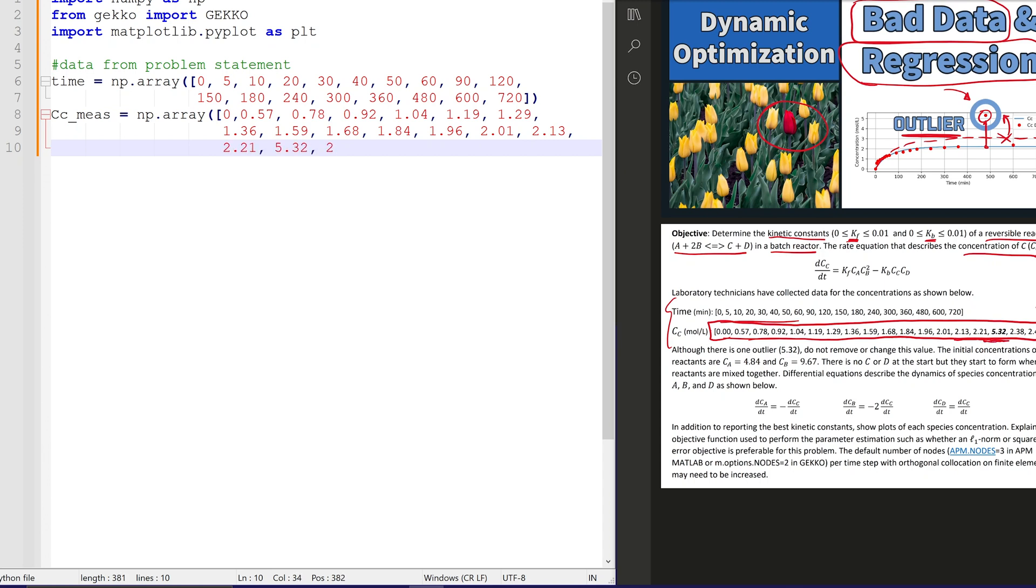Okay, I'm just going to finish typing these out. There's 5.32. All right, now we'll create our GEKKO model.